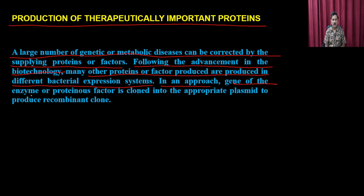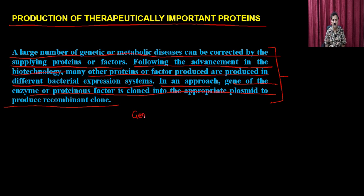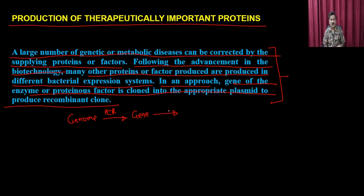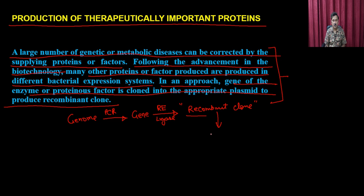In one approach, the gene of the enzyme or proteinaceous factor is cloned into a plasmid to produce a recombinant clone. You first take the gene, amplify it with PCR, digest it with restriction enzymes to produce cohesive ends, then perform a ligation reaction with a ligase to produce the recombinant clone. This expression clone is then transformed into a suitable host.